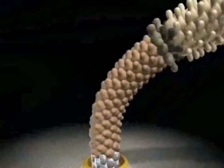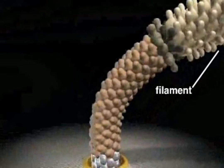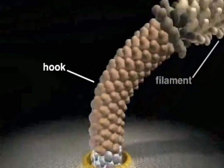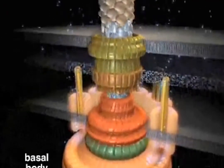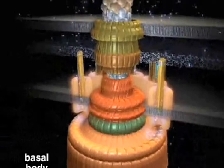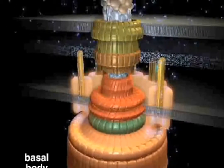Just outside of the cell wall, the filament is connected to a flexible rotating hook. The filament, the hook, and a structure called the basal body, located below the cell's surface, make up the three parts of the flagellum.